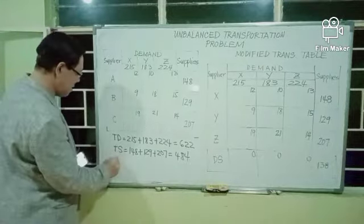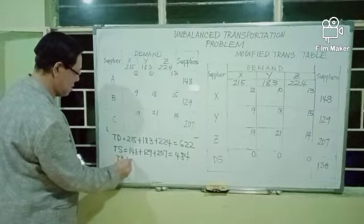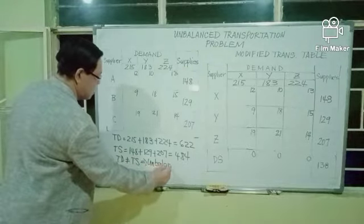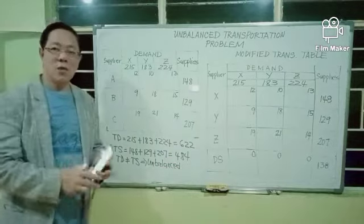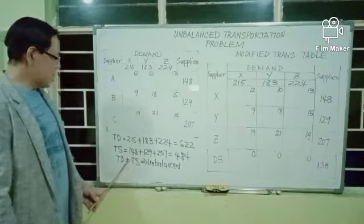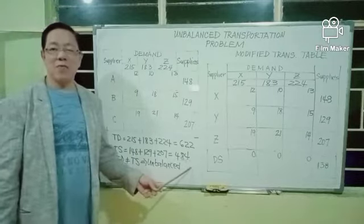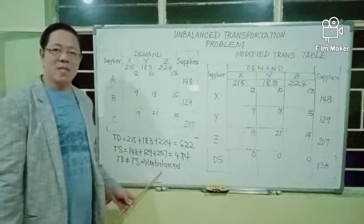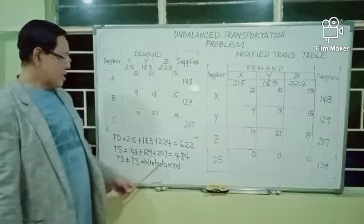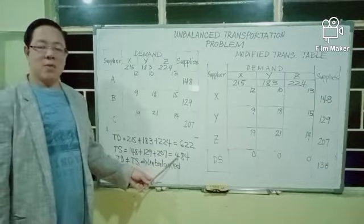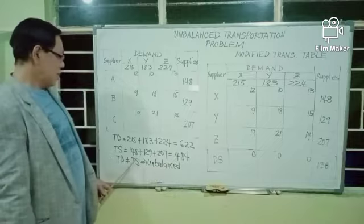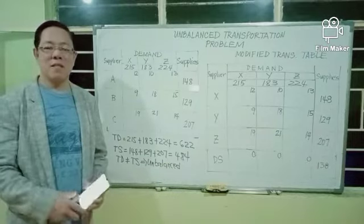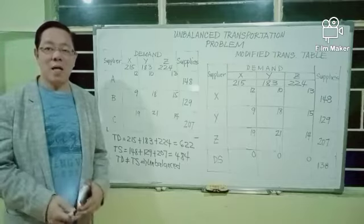Since the total demand of 622 is not equal to the total supply of 484 units, we conclude that the given transportation problem is an unbalanced transportation problem. In particular, the total demand is greater than the total supply — that is the first case of unbalanced transportation problem.